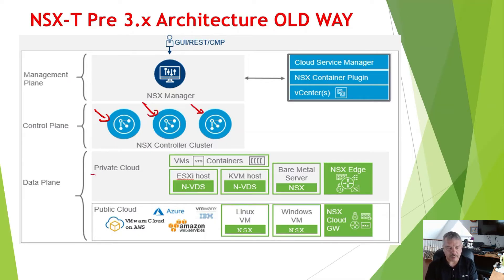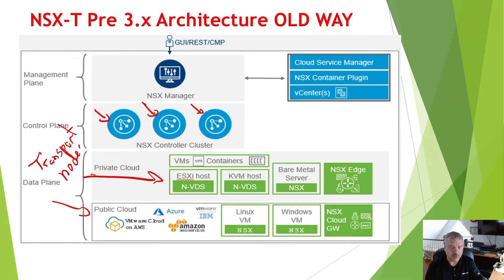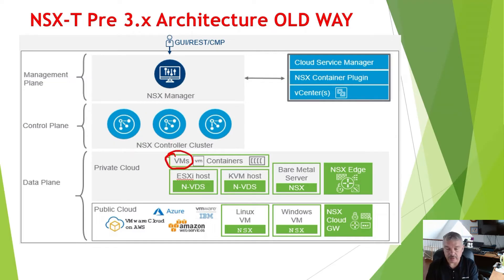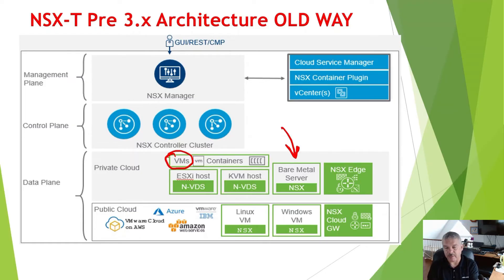In the data plane, you've got private cloud and public cloud. In the data plane there are things called transport nodes. A transport node is a host that's been prepared for NSX. Your ESXi server, once prepared for NSX, is called a transport node. There was also KVM host support. These could be running virtual machines or containers on your ESX or KVM hosts. There was also support for bare metal servers — maybe a database server you didn't virtualize — and another thing called the NSX Edge, which I'll talk about separately when we get into routing.